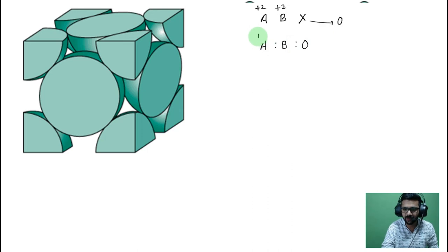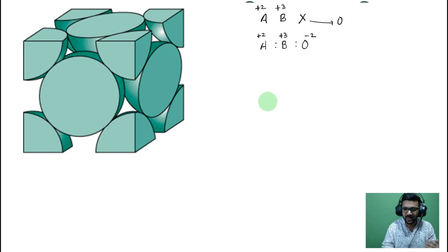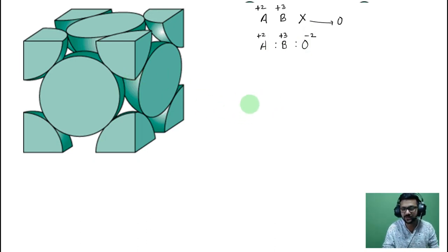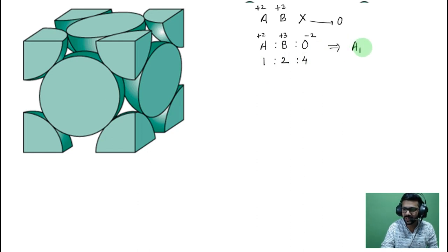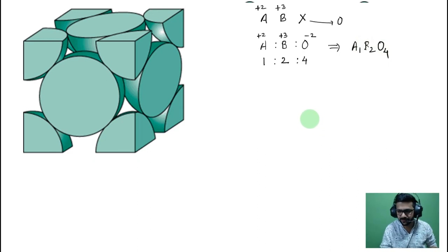In these compounds, A has a +2 charge, B has a +3 charge, and oxygen has a -2 charge. In terms of stoichiometry per unit cell, there is 1 atom of A, 2 atoms of B, and 4 atoms of oxygen, giving the formula A₁B₂O₄. These are called spinel compounds.